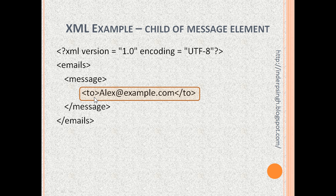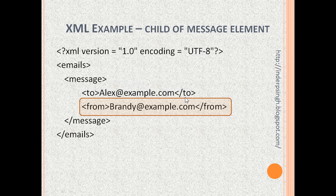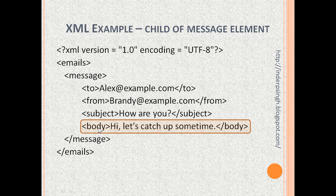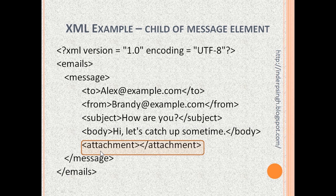An XML element contains the starting tag, the data, and the ending tag. We have given data for the 'to' field in our email message. We can also give 'from', which is another XML element containing data for this particular message. Then we can give the 'subject', 'body', and 'attachment' XML elements. Once we have all this XML created, we can open it in the browser and see how it looks.